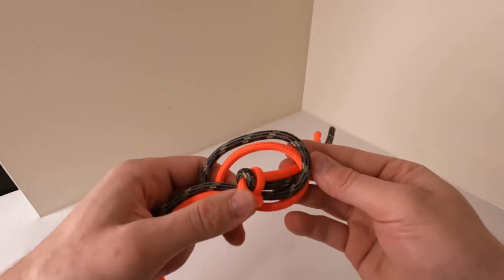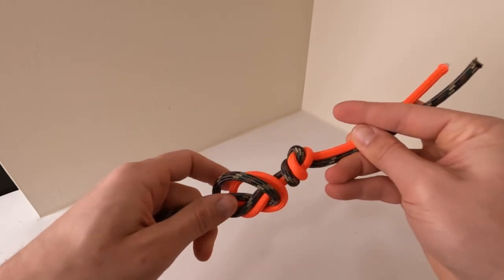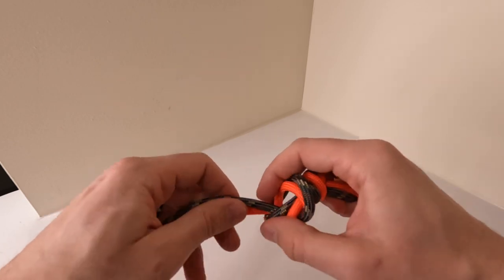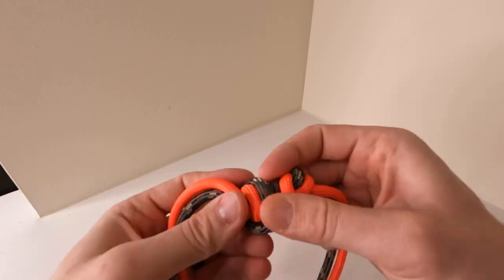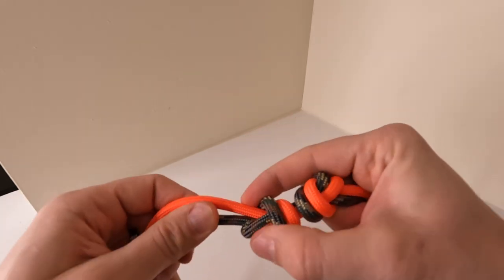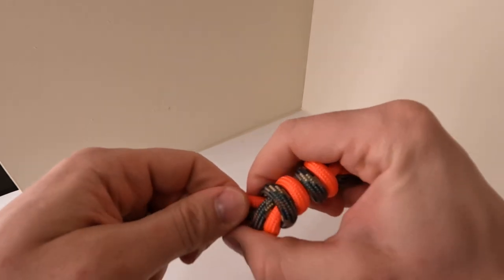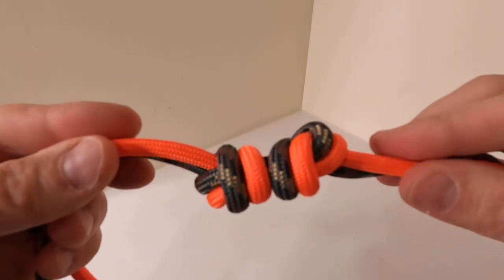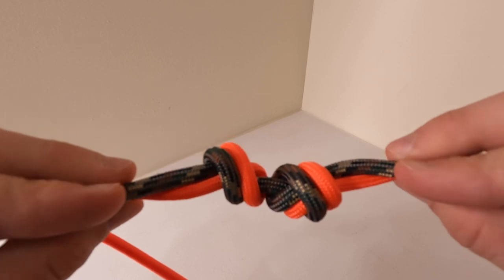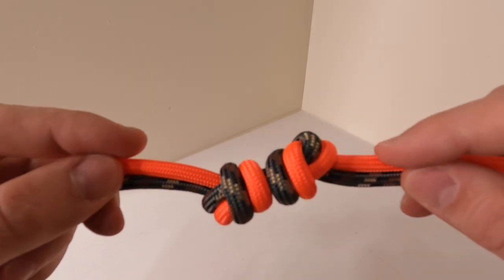The knots don't have to be touching necessarily as long as they're close enough I've never had a problem. I always pull both ends tight after I dress the knot just to make sure there's no more slippage.